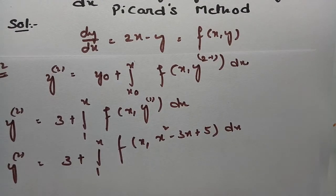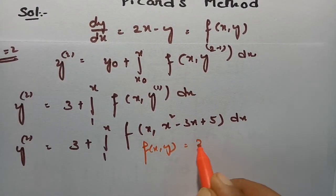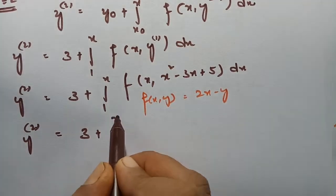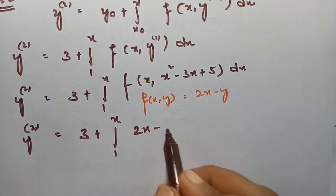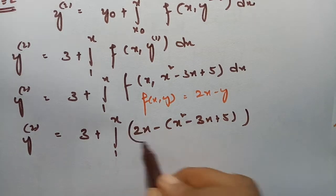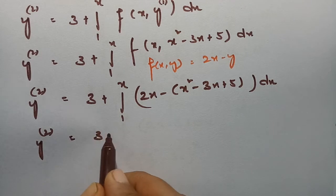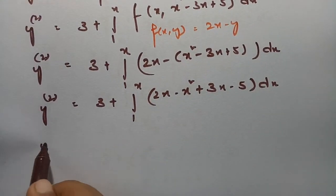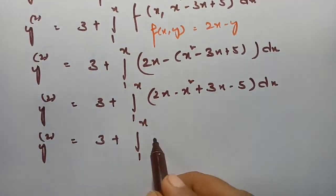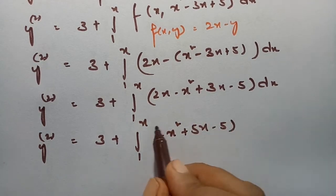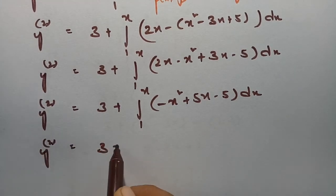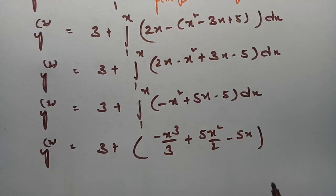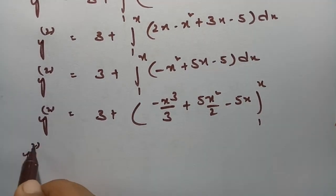f(x, y) = 2x - y, so substituting y₁ = x² - 3x + 5, this becomes 3 plus integral from 1 to x of (2x - (x² - 3x + 5)) dx, which simplifies to 3 plus integral from 1 to x of (-x² + 5x - 5) dx. Integrating: 3 plus [-x³/3 + 5x²/2 - 5x] from 1 to x.